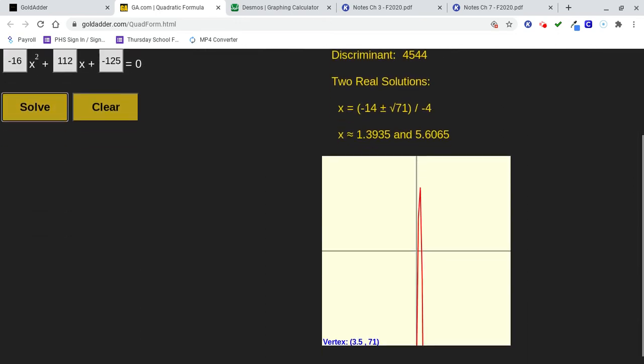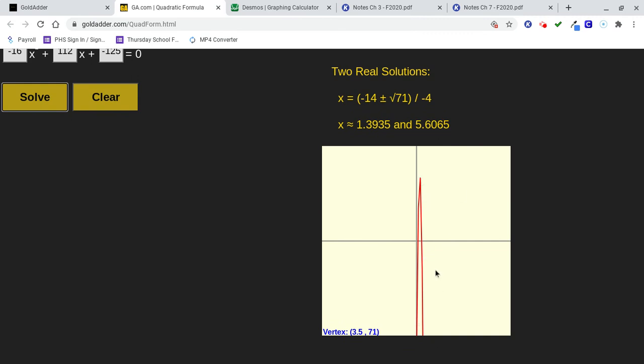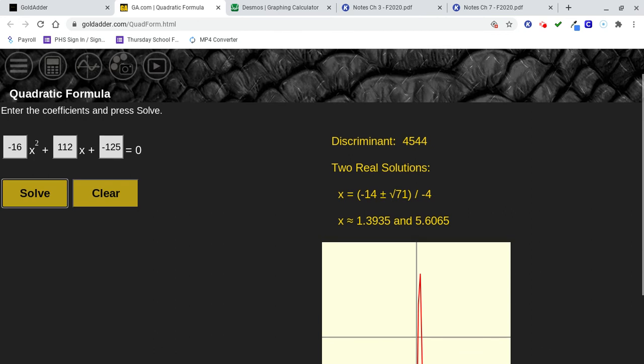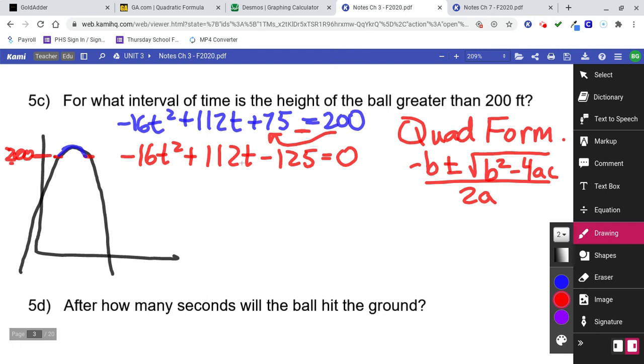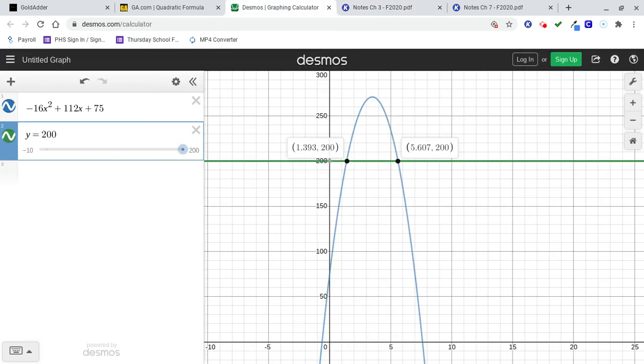So if we hit solve, it's a real thin looking parabola, but that's kind of what it is anyway. If you notice down here, they give you the vertex and that is 3.5 comma, it's actually 271. I think there's a spacing issue with the programming, but more importantly look at these two numbers right here. These are your two solutions. 1.393 and 5.607. Those are the numbers. Those are the solutions to this red equation. This number is 1.393 and this number was 5.607, look back at Desmos.